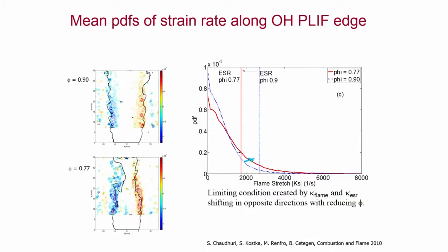One question we did not answer is why the stretch PDF shifts to higher values — why does the flame get more strained as it approaches blow-off. At equivalence ratio 0.9, the flame has a large cone angle because its turbulent flame speed is large, and it envelops the Kelvin-Helmholtz vortices. But as the flame speed reduces, to balance with the local normal velocity, the flame cone angle reduces and the flame becomes more columnar.